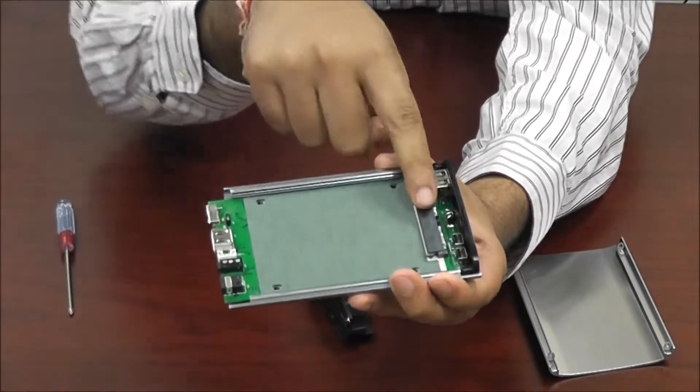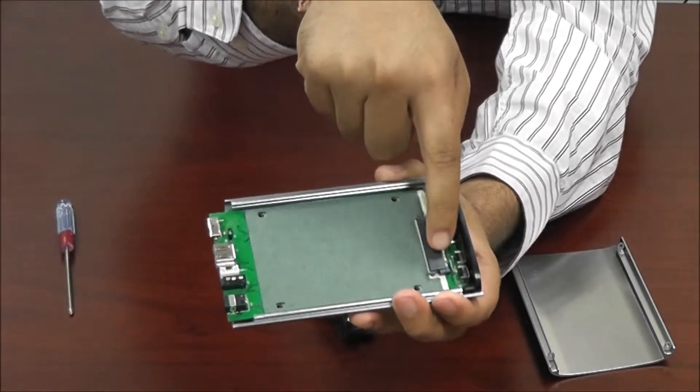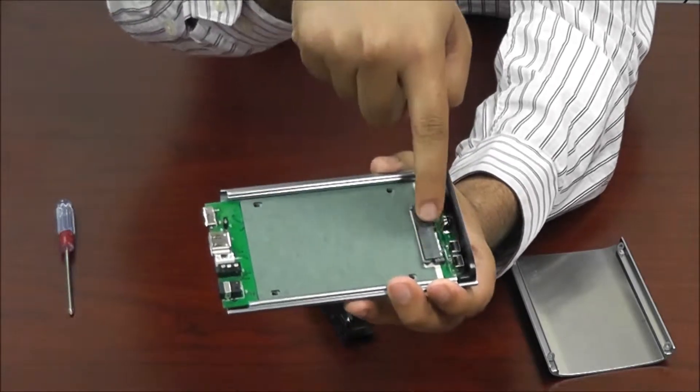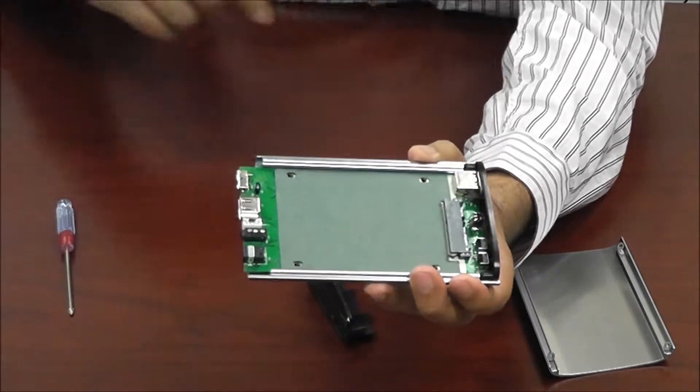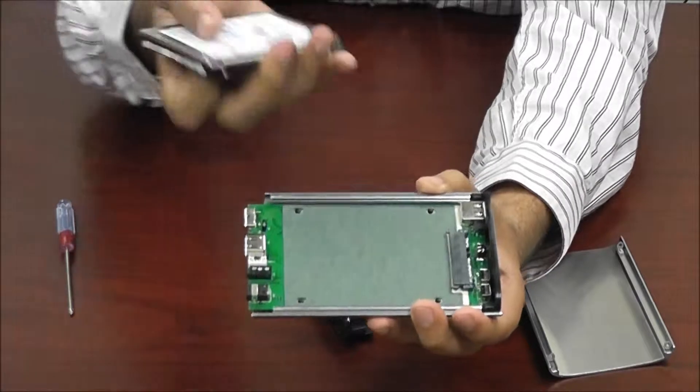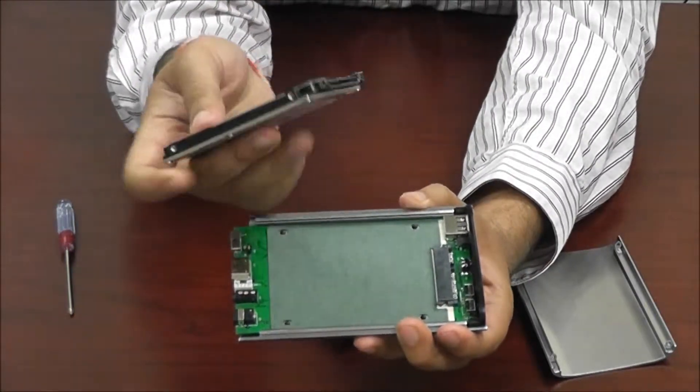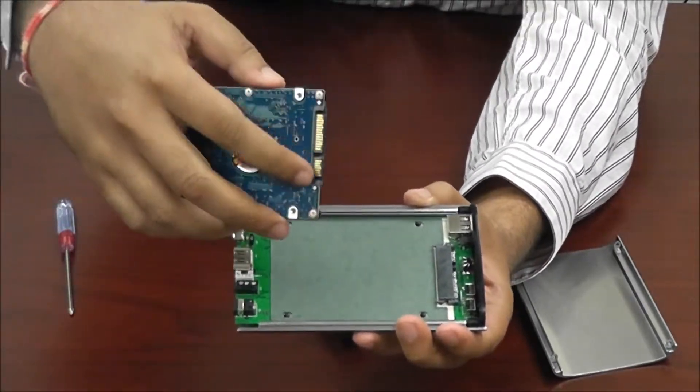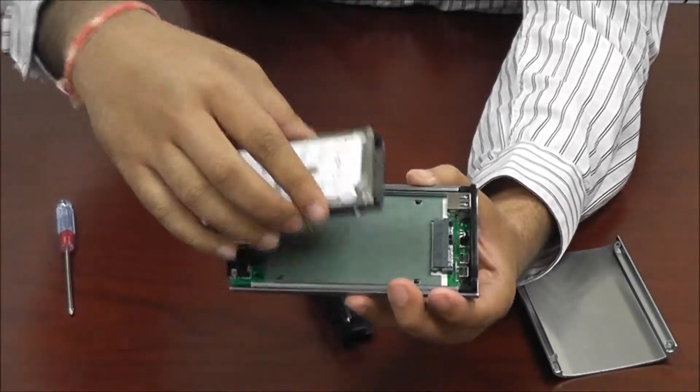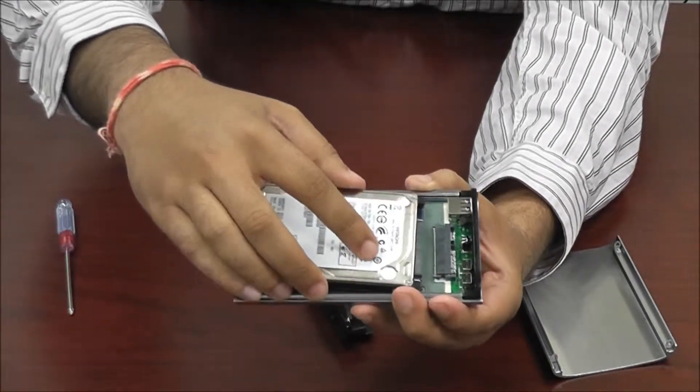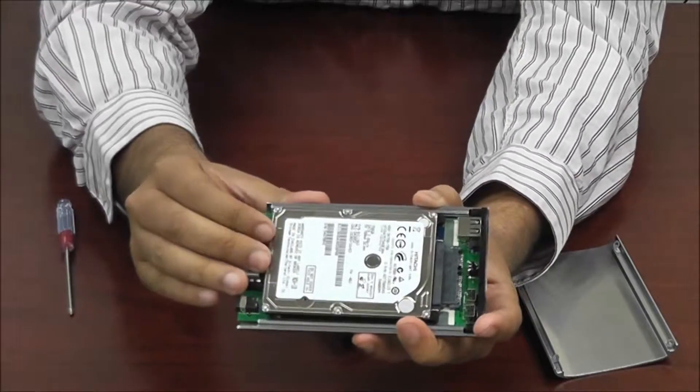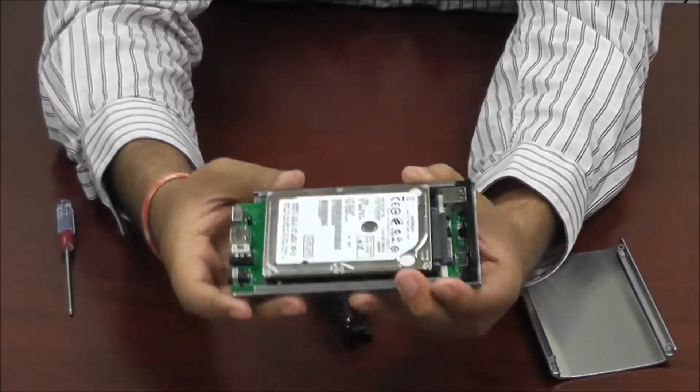You could easily see that there's a 2.5 inch hard drive connection right here. Little port for it. So you get your hard drive which I have one right here and you'll see that the connector is on one side of the hard drive. Basically you're just gonna match them up and connect it. So go ahead and connect your hard drive and that's it. It's in.